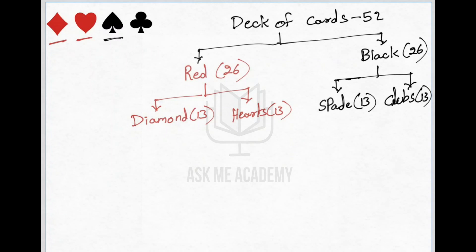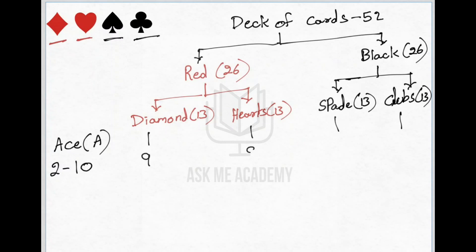This is spade and this is called clubs. Now how many cards are there in each shape? One is ace — one of diamonds, one of hearts, one of spade, and one of clubs, represented with the letter A. Then there are numbered cards from 2 to 10, a total of nine cards per shape.